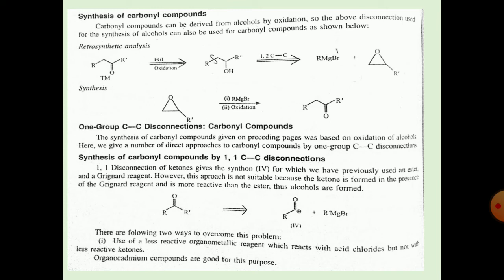For the synthesis of a carbonyl compound by 1,1 C-C disconnection: the preceding approach was based on oxidation of alcohol. Here we consider direct approaches to the carbonyl group by 1,1 carbon-carbon disconnection. The 1,1 disconnection of a ketone gives a synthon for which we previously used an ester and a Grignard reagent. However, this approach is not suitable because the ketone formed is more reactive than the ester in the presence of Grignard reagent, and thus alcohols are formed instead.